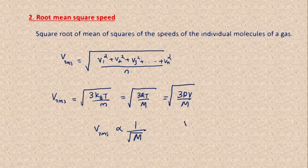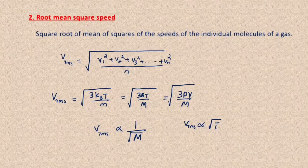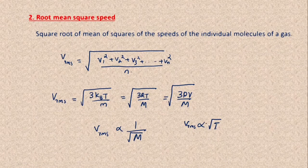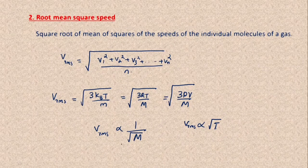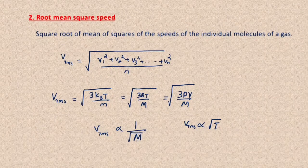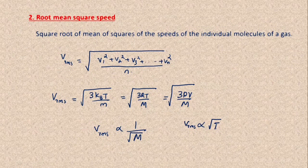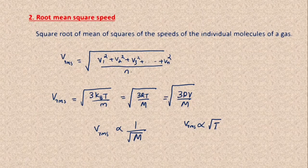V_rms is directly proportional to the square root of T, meaning the root mean square speed of gas molecules is directly proportional to the square root of temperature. At a given temperature, V_rms is directly proportional to 1 over the square root of M. This means that if the gas is lighter — since M is small — the RMS speed will be comparatively high. So it is inversely proportional to the square root of molecular mass.